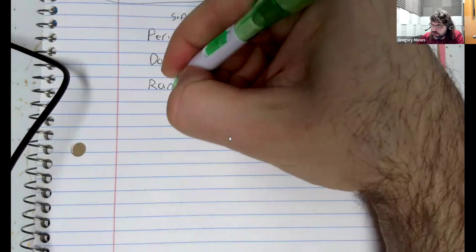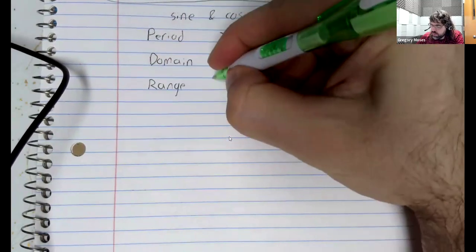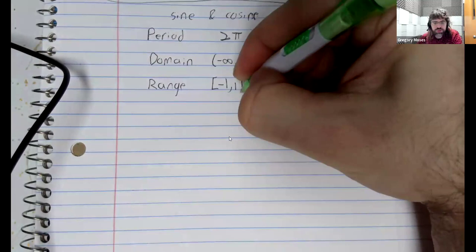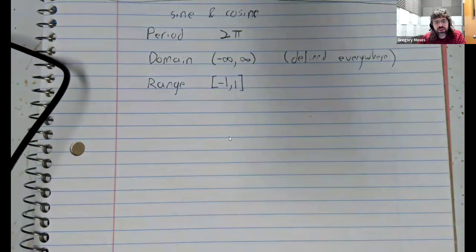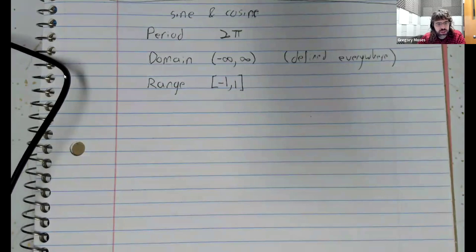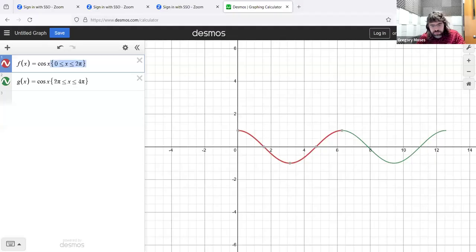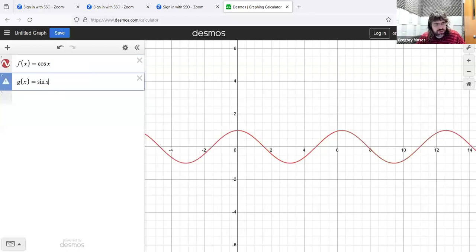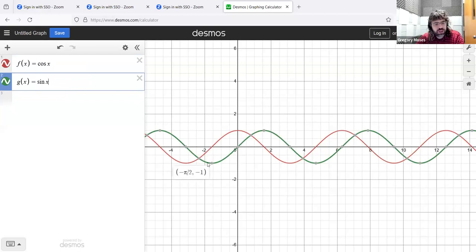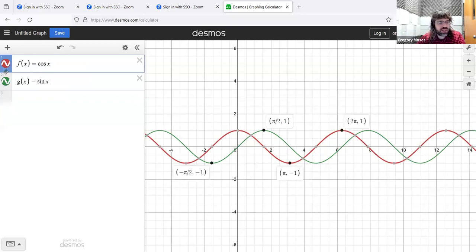The range goes from negative 1 to positive 1. If we look at the graph, let's look at both the graphs. You see these go down to negative 1 and up to positive 1. Down to negative 1, up to positive 1.